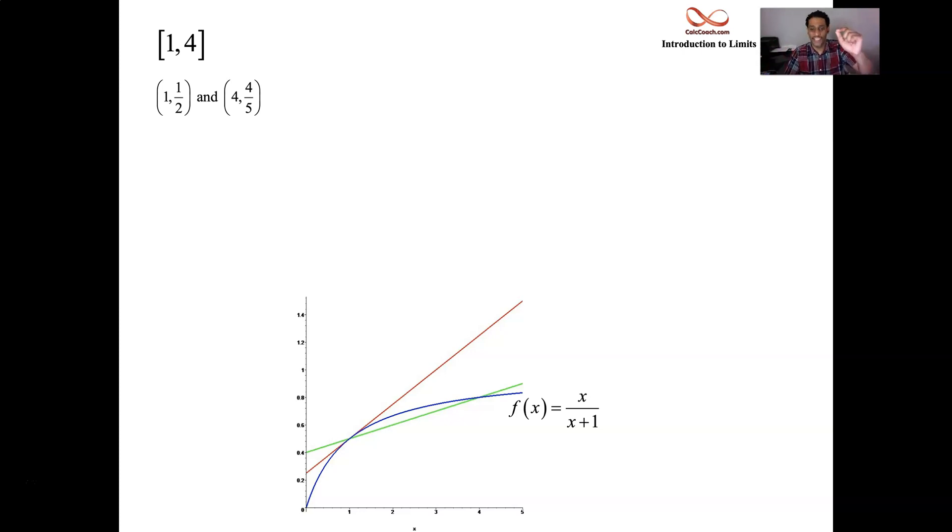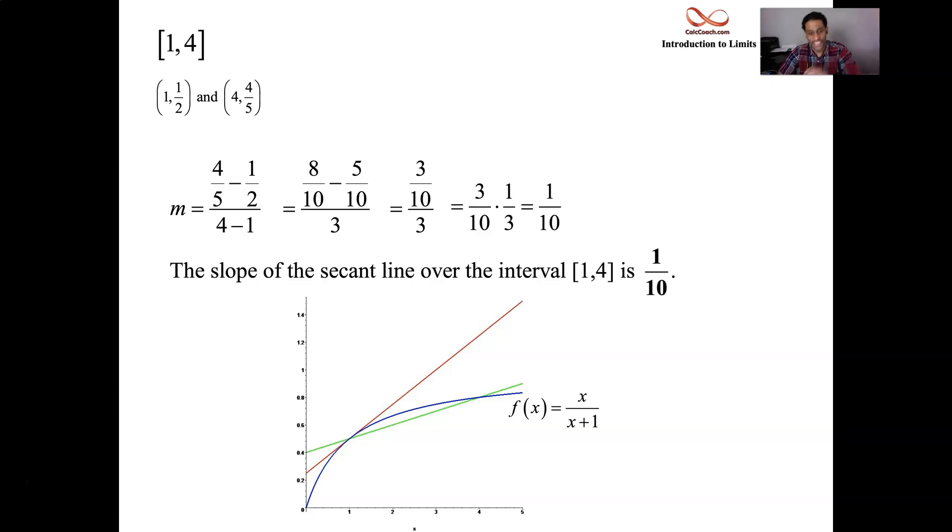So you plug a one in, x over x plus one, one over one plus one, it's a half. You plug a four in, four over four plus one, that's four fifths. You have your two points. Find the slope of the line that connects those two points. So we'll track four fifths, subtract one half, divided by four minus one. We'll end up with three tenths over three, which is one tenths. The secant line slope is one tenths on that interval, one to four. Our slope for the tangent line is more than that. We have a steeper line.